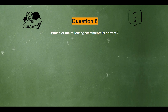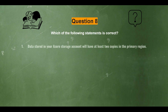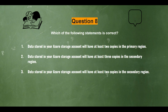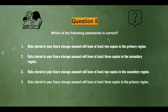Question 8. Which of the following statements is correct? Option 1: Data stored in Azure storage account will have at least two copies in the primary region. Option 2: Data stored in your Azure storage account will have at least three copies in the secondary region. Option 3: Data stored in your Azure storage account will have at least two copies in the secondary region. Option 4: Data stored in your Azure storage account will have at least three copies in the primary region.